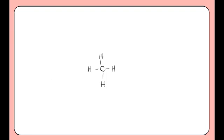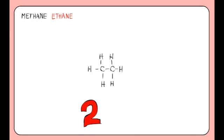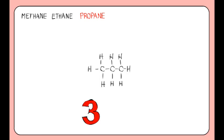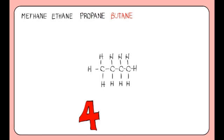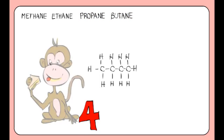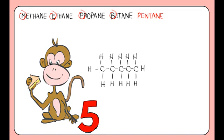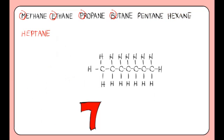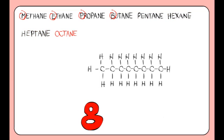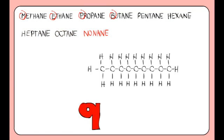The first is methane. And if we add a CH₂, we get ethane, and another gives propane, and another gives butane. You can try to remember the first four by the mnemonic: monkeys eat peanut butter. From then it's pentane, hexane, heptane, octane, nonane, and decane.